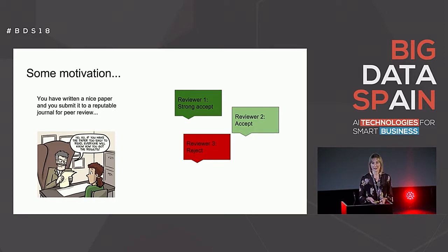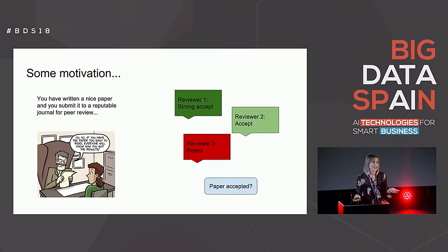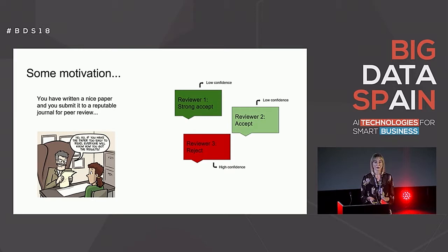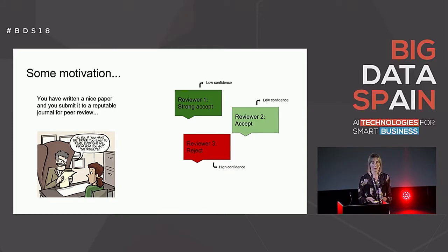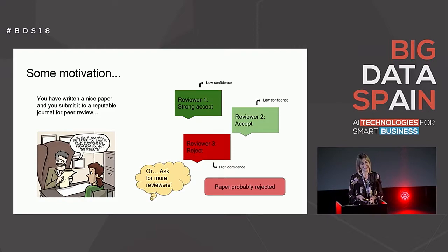Now imagine reviewer one says strong accept, reviewer two says accept, but reviewer three says reject. So we have two good opinions and one bad opinion. Is the paper accepted in this case? It depends. And imagine that when you submit your review, you can indicate your level of confidence. The first reviewer who said strong accept has low confidence — he or she is not an expert on the topic. Reviewer two who said accept also has low confidence. But the third reviewer who said reject has high confidence on the topic — he or she is an expert. So maybe his or her opinion is more important, and in this case probably the paper is rejected. Or the editor can ask for more reviewers, because in our ensembles we can increase the size of the ensemble so it is more reliable.